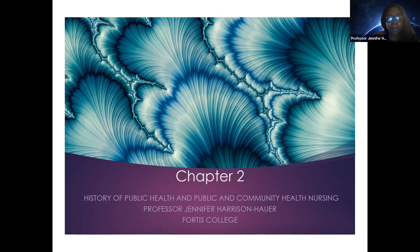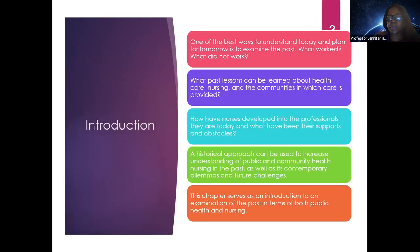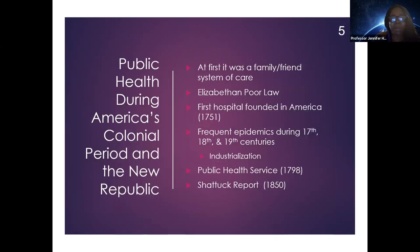Chapter two covers the history of public health and public health community nursing. Make sure you have an understanding of the objectives. We look at what has influenced the development of public health and community health nursing — starting way back with ancient Babylonians and their need to understand hygiene, followed by the Egyptians, and going into the industrial revolution, all of which influenced our early public health.